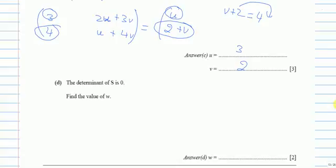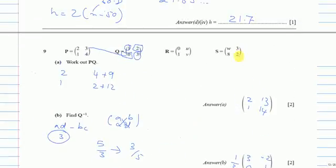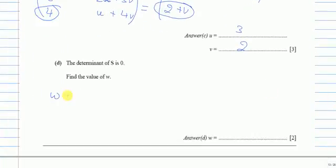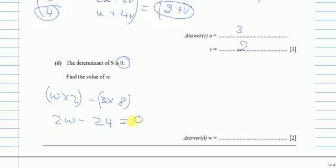Find, okay, the determinant of S is 0. Find the value of W. So what is the determinant? Again, these two times minus then these two. So it's W times 2 minus 3 times 8. So it will be 2W minus 8 times 3 is 24 equals 0. This is the formula of determinant, which is 0.